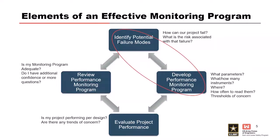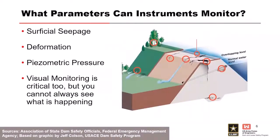There are other elements such as evaluating overall performance as we collect data and reviewing our monitoring program over time, but we won't focus on those here. From an overall perspective, the primary parameters instruments can monitor at a dam include seepage, surficial seepage, deformation, piezometric pressure — water moving through the structure — and visual monitoring, which is also critical.